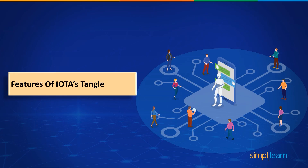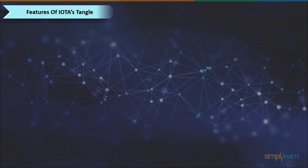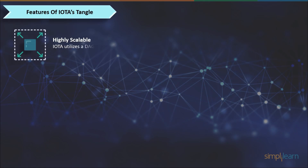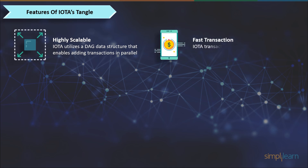Now that you have understood all the concepts of IOTA's Tangle, let me tell you some unique features. First, it is highly scalable. Unlike blockchain alternatives, IOTA uses a DAG, or Directed Acyclic Graph data structure, that enables transactions to be added in parallel. Second is fast transactions — IOTA transactions are confirmed within minutes, unlike other cryptocurrencies whose transaction confirmation rates depend on the crowd.